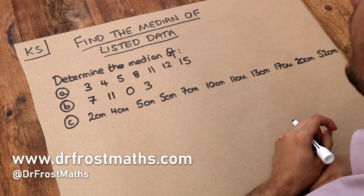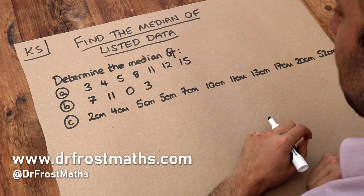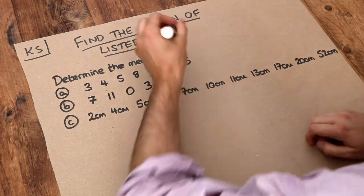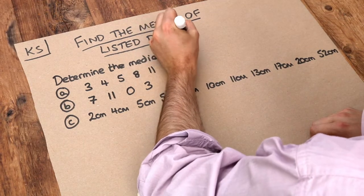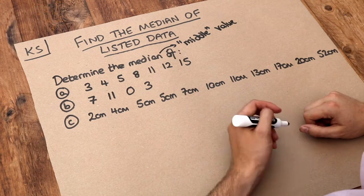Hello and welcome to this Dr Ross Maths key skill video on finding the median of listed data. Now the median is a type of average and it just means the middle value, and it makes sense we might use the middle value as the average.